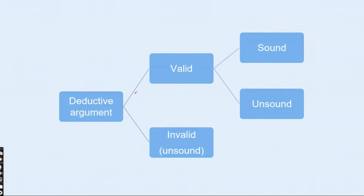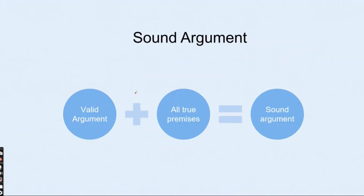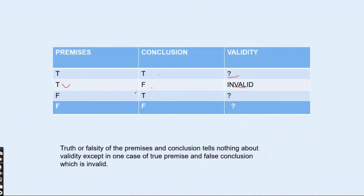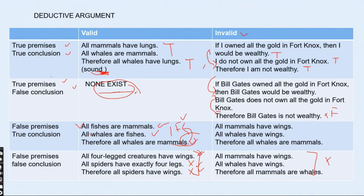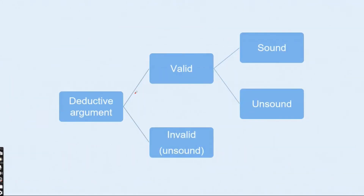To summarize: a deductive argument can be valid or invalid. A valid argument can be sound or unsound, and an invalid argument is always unsound. A sound argument requires both a valid argument and all true premises. The classic example: 'All mammals have lungs, all whales are mammals, therefore all whales have lungs' — true premises, valid argument, therefore sound.